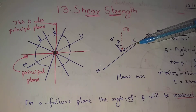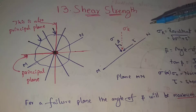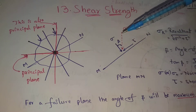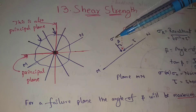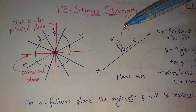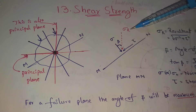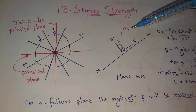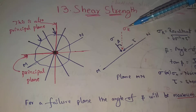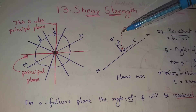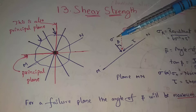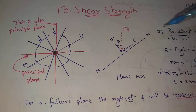On plane MN: Tau means shear stress, Sigma means normal stress, and Sigma R means resultant stress. The resultant stress is equal to the root of Sigma squared plus Tau squared.